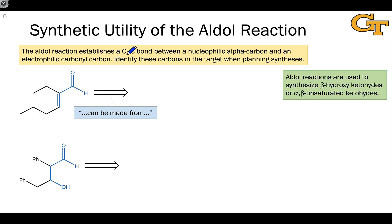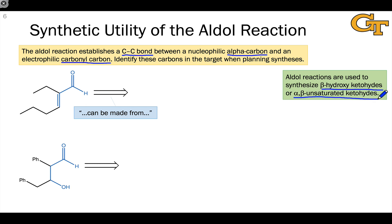The synthetic utility of the aldol reaction comes from the fact that it forms a carbon-carbon bond between two key atoms within carbonyl compounds: a nucleophilic alpha-carbon and an electrophilic carbonyl carbon, which becomes a beta-carbon in the product. Aldol reactions can be used to synthesize either beta-hydroxy ketones — the products of aldol addition — or alpha-beta unsaturated ketones, which are the products after water is eliminated in an aldol condensation.